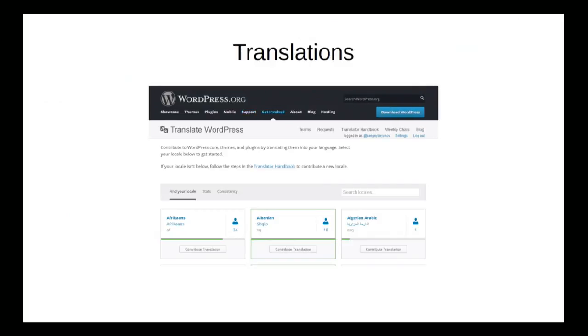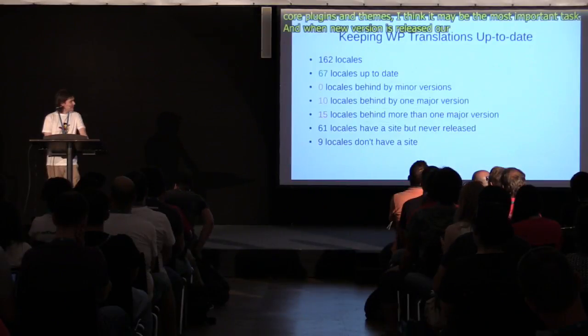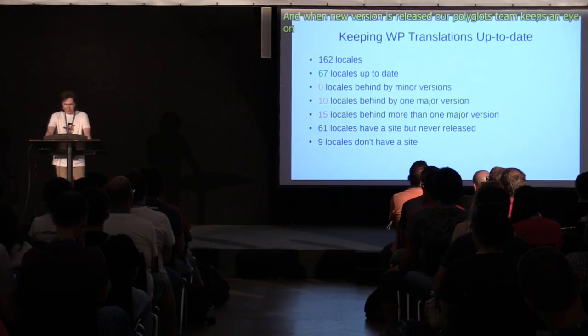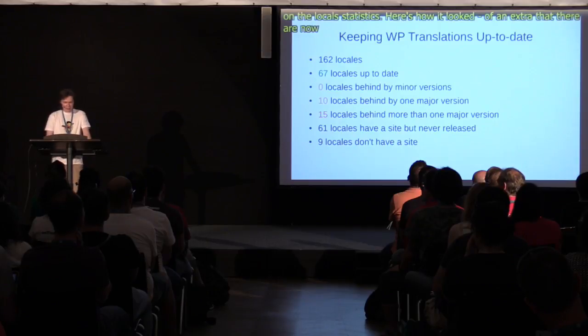An important task for our local community is to provide translations for WordPress core, plugins, and themes. I think it's maybe the most important task. When a new WordPress version is released, the Polyglots team keeps an eye on the local stats, checks how things look, and makes sure that there are no issues and the locales that need some help can get it.